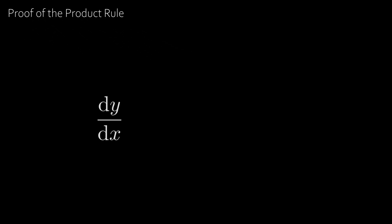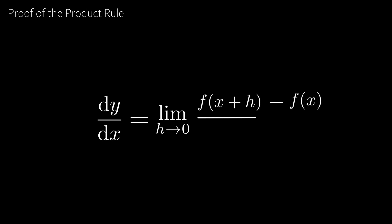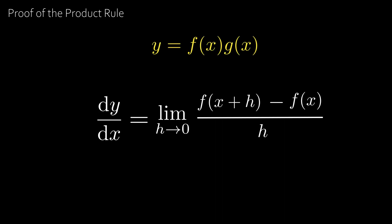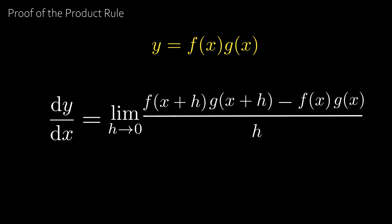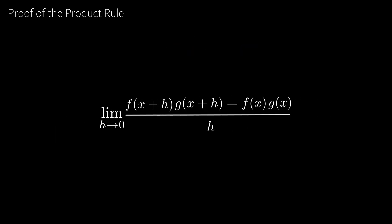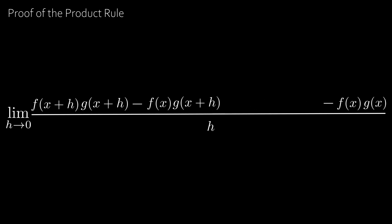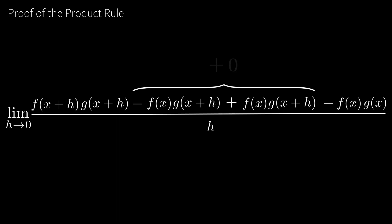Here is the proof of the product rule. Recall that dy/dx equals the limit as h→0 of [f(x+h) − f(x)] / h. Let y = f(x)·g(x). Then dy/dx = lim(h→0) [f(x+h)·g(x+h) − f(x)·g(x)] / h. We use a classical trick: subtract and add f(x)·g(x+h), which is equivalent to adding zero.